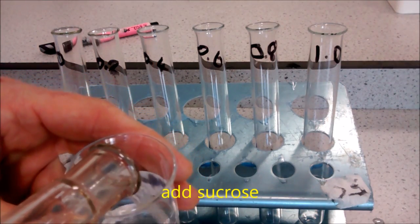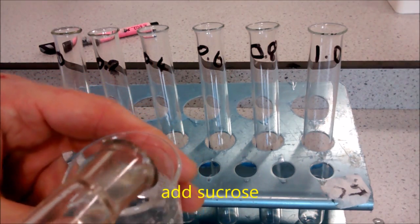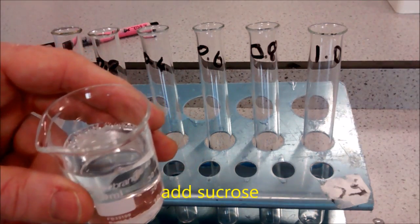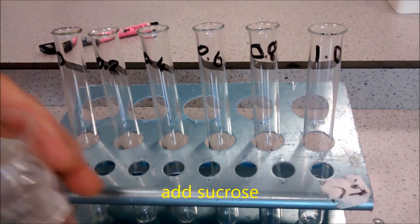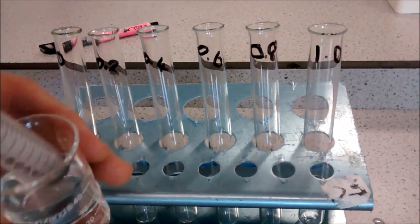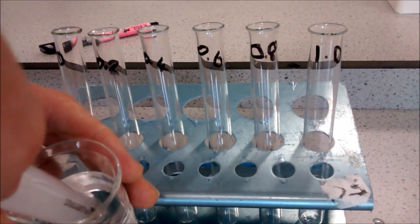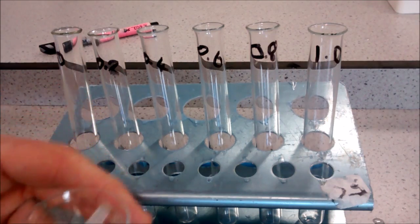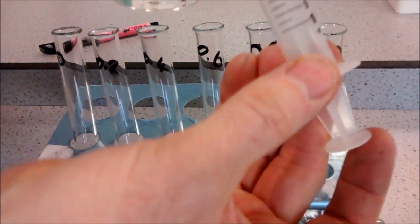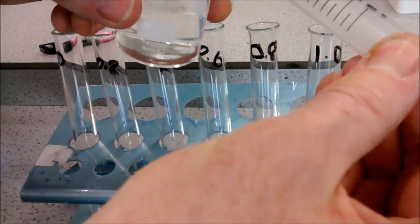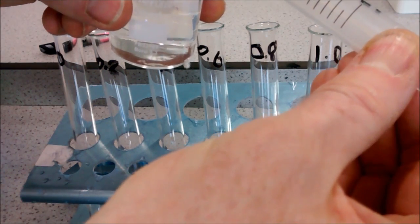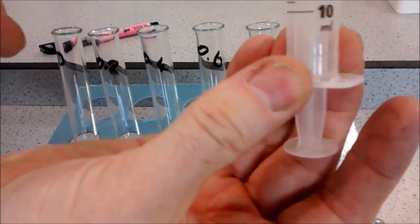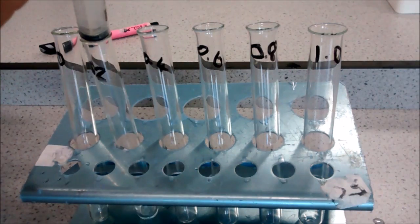Put some sucrose into the beaker and add the correct volume. For the 0.2 molar, we need to add two cubic centimeters. Use your syringe to dispense to the line with the black plunger. That's two cubic centimeters. In it goes.